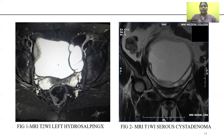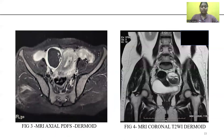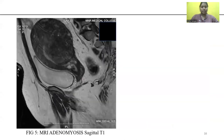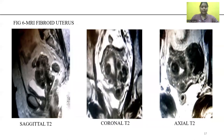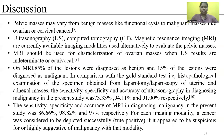Images shown include: a T2 coronal image of left hydrosalpinx and a serous cystadenoma. Images of a dermoid case are also presented. A case of adenomyosis is shown. A case of fibroid is demonstrated in sagittal, coronal, and axial planes.